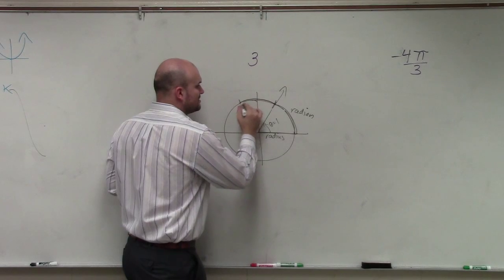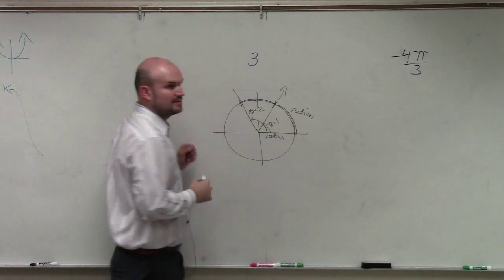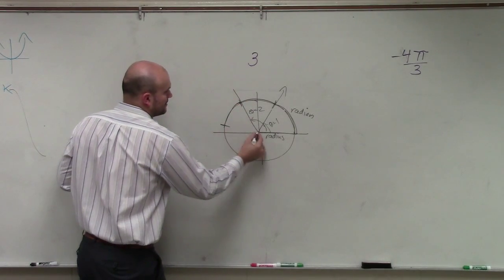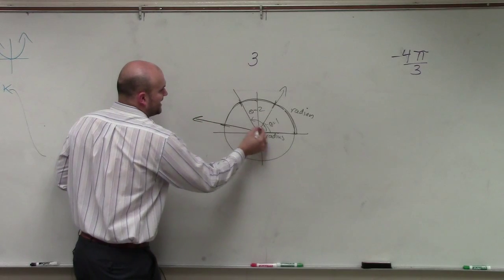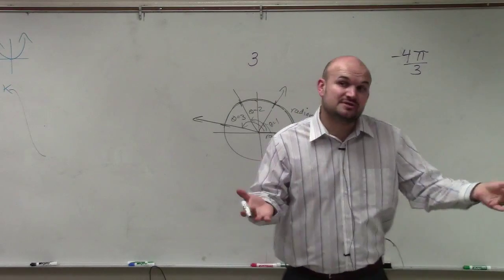So if you do that twice, that rotation is two radians. If you wrap that around three times, which this question is asking, that angle is three radians, right? And that's how I introduced, again, pi.